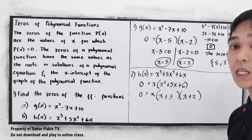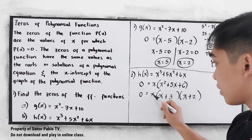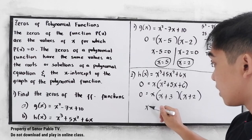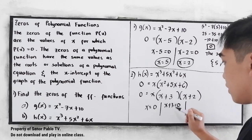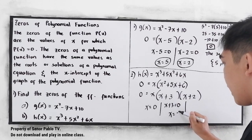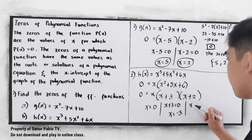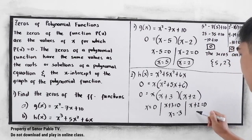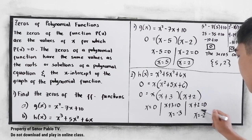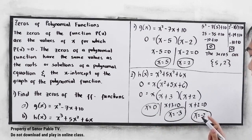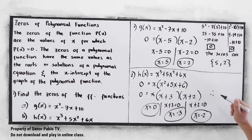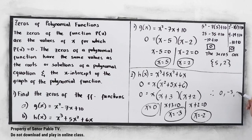Now solve for the values of x. Equate to 0: we have x equal to 0. The next factor, x plus 3 equal to 0, so x is equal to negative 3. And x plus 2 equal to 0, so x is equal to negative 2. So we have 0, negative 3, and negative 2. Therefore, the zeros are 0, negative 3, and negative 2.